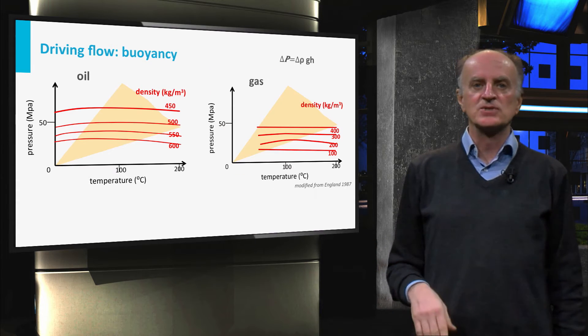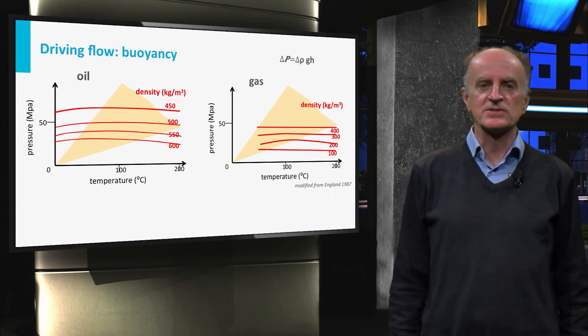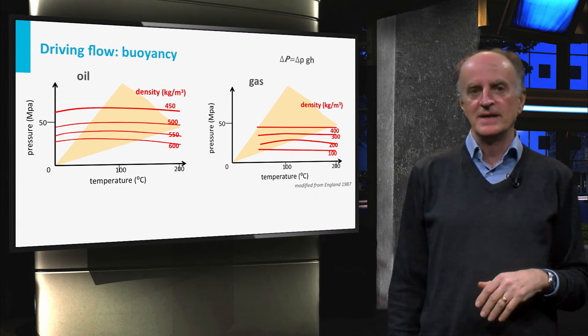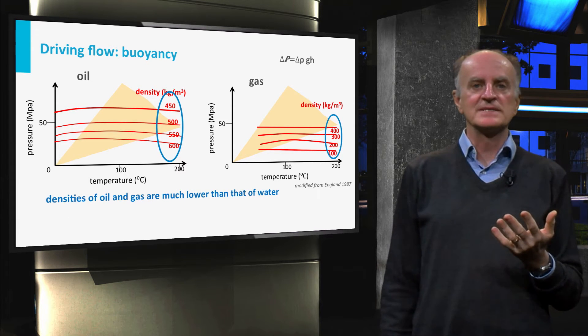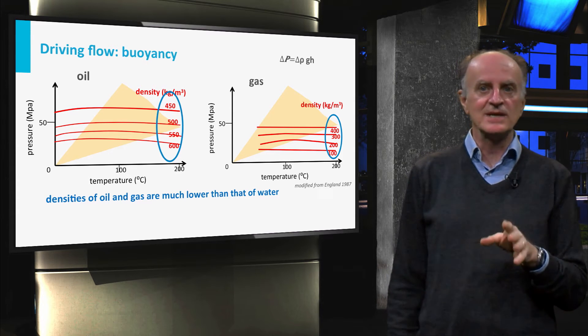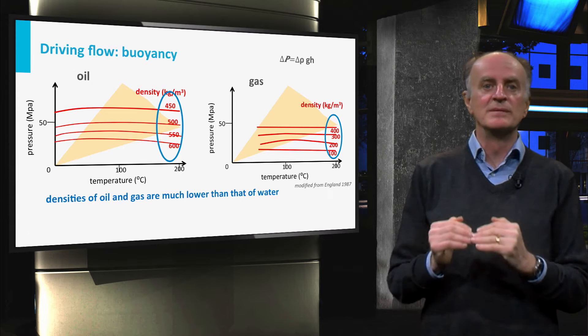The plots in the slide show the densities of oil and gas at a range of temperatures and pressures. The latter is proportional to depth. The first order message of these slides is that densities of oil and gas are substantially lower than that of water. This means that hydrocarbons will move upward.